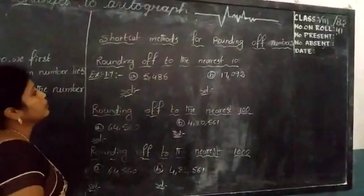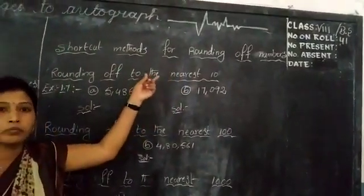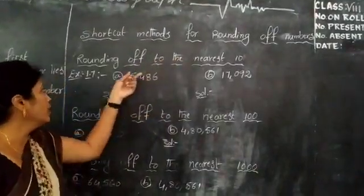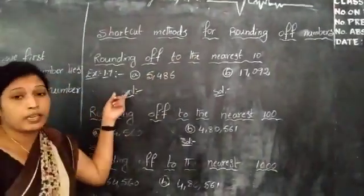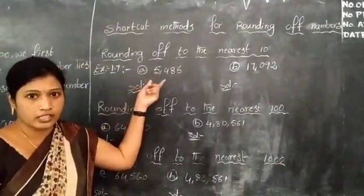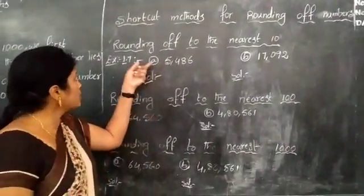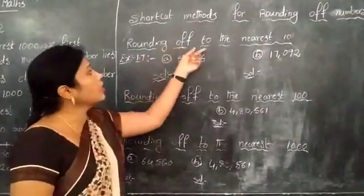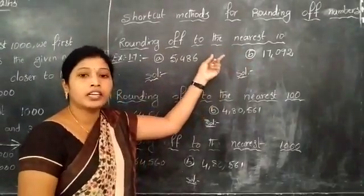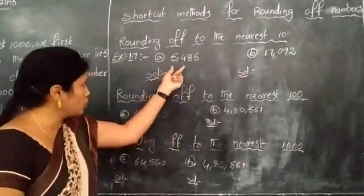Now let's look at shortcut methods for rounding of numbers. I will explain the shortcut methods for the exercise questions. See exercise 1.7. First of all, rounding of numbers — see the first question.